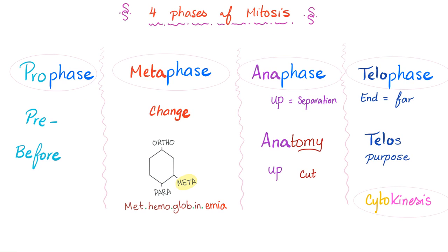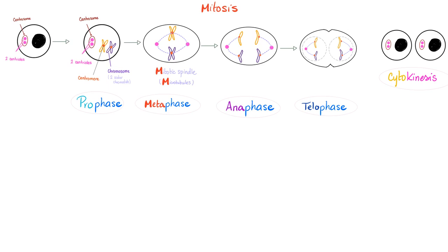Phases of mitosis: pro phase, meta phase, ana phase, telo phase. Pro means pre. Meta means change — specifically alignment, in the middle. Ana phase: ana means up or separation; that's why we say anatomy, to cut you up. Telo phase: telo is the purpose, the end. So the phases of mitosis are pro phase, meta phase, ana phase, telo phase.